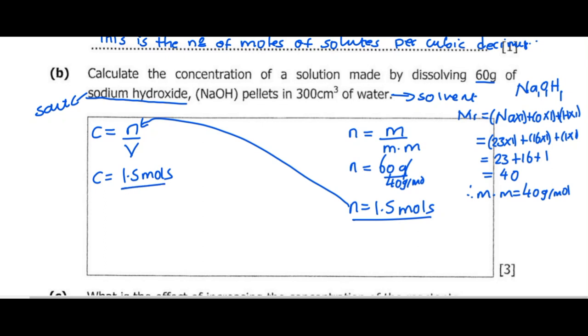The volume is 300 cubic centimeters, but we need to convert this into decimeters cubed. One decimeter cubed equals 1000 centimeters cubed. To convert from centimeters cubed to decimeters cubed, we divide by 1000.